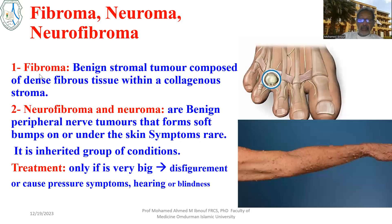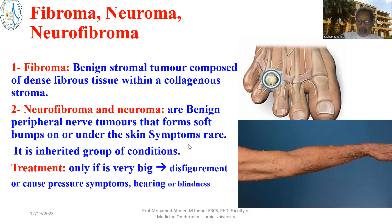In the fibrous investing layer behind the skin and subcutaneous fat, tumors might arise from fibrous tissue — this could be a fibroma or neurofibroma, and neuromas from nerves and nerve sheath. A fibroma is usually benign, composed of dense fibrous tissue within a collagenous stroma. This could also be a neuroma — these are the nerves passing to the toes. It is usually symptomless and benign, but it can cause pain. If it is big or causing disfigurement, it can be removed surgically.